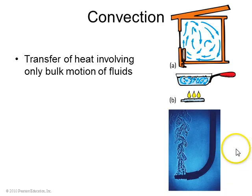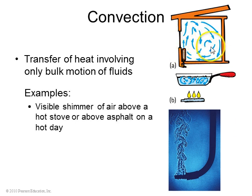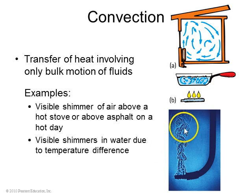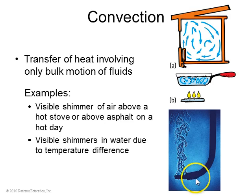Convection is the transfer of heat involving the bulk motion of fluids. In this room, for example, you might be able to see a visible shimmer of air above a radiator — that's air moving and carrying heat around. You can also sometimes see visible shimmers of heat currents in water, such as in a pot or above a heating element.